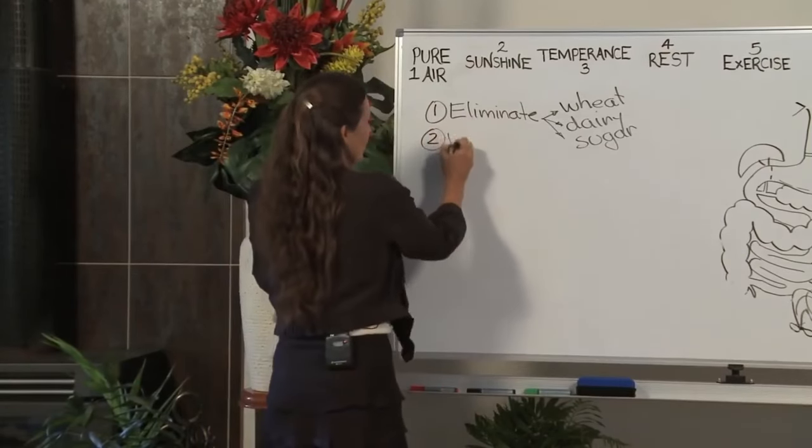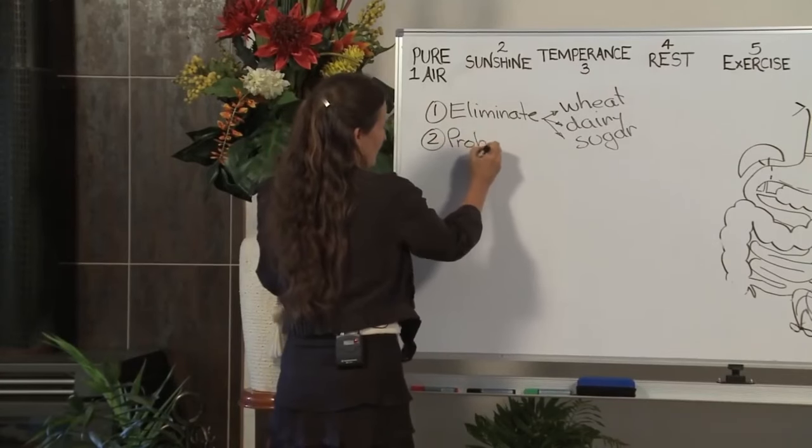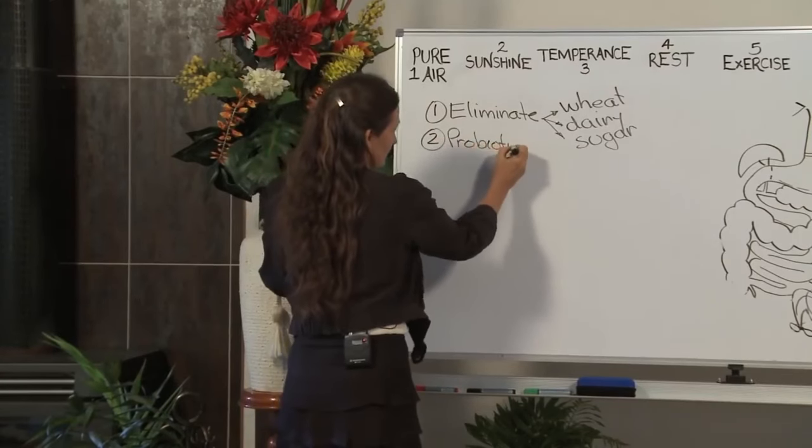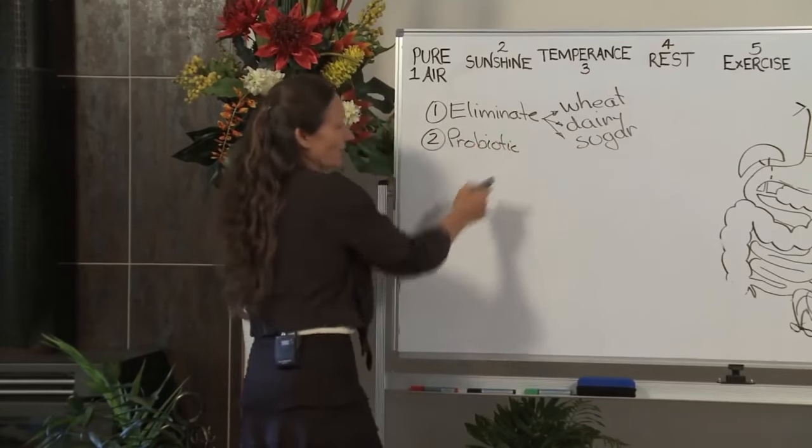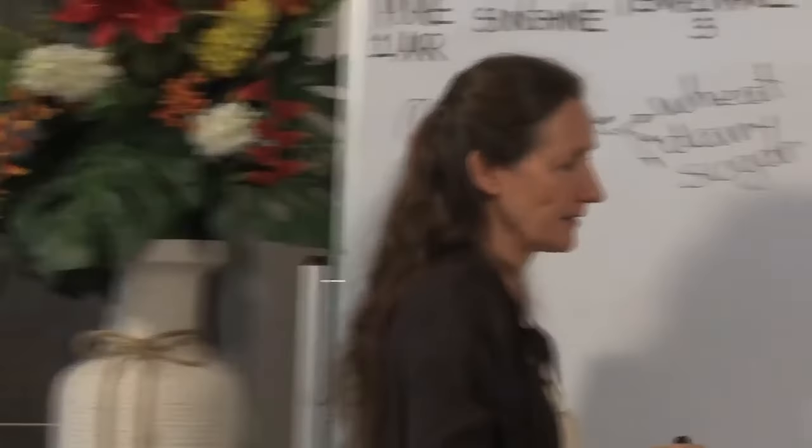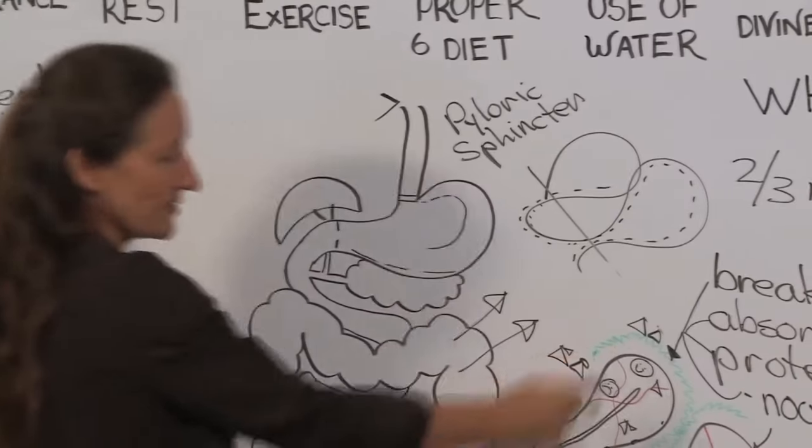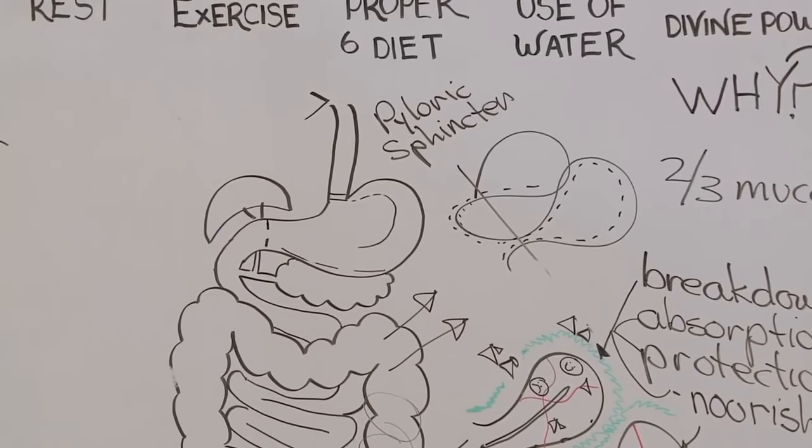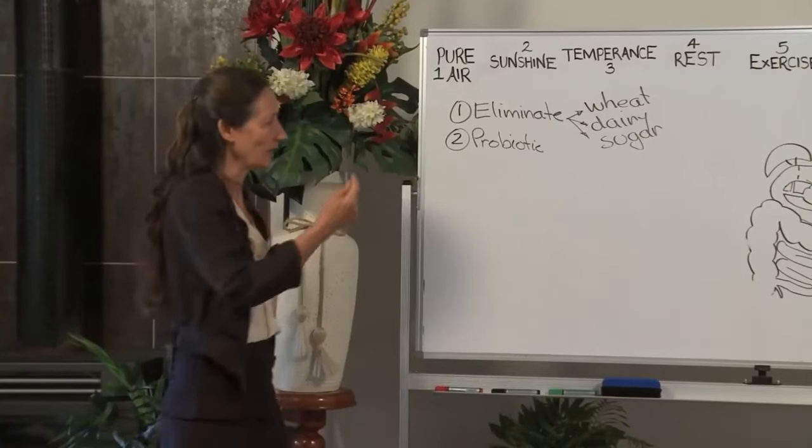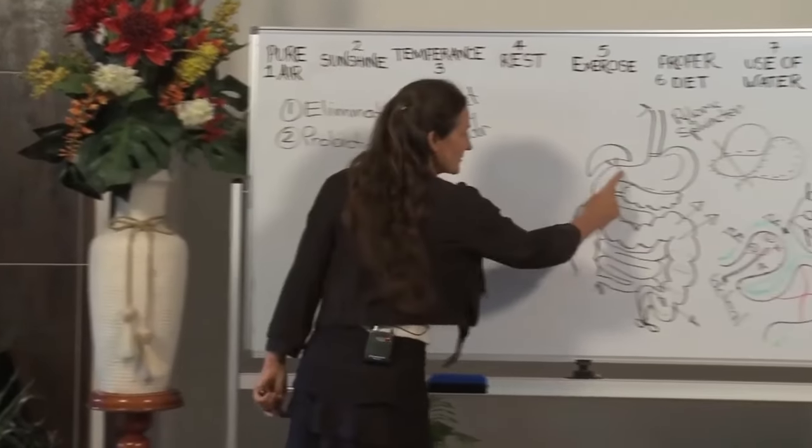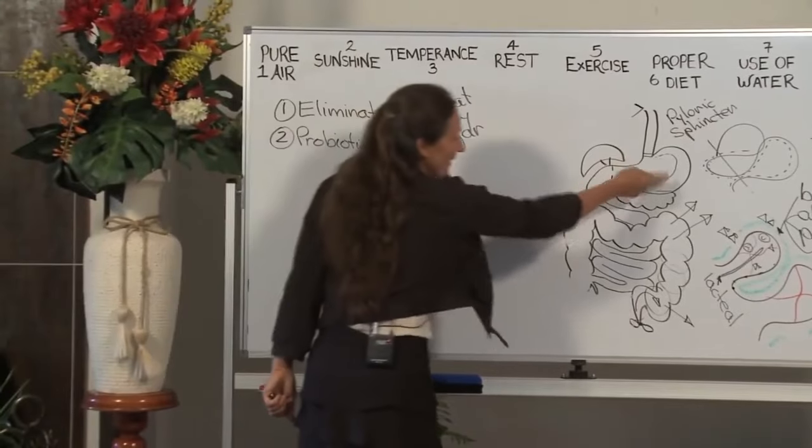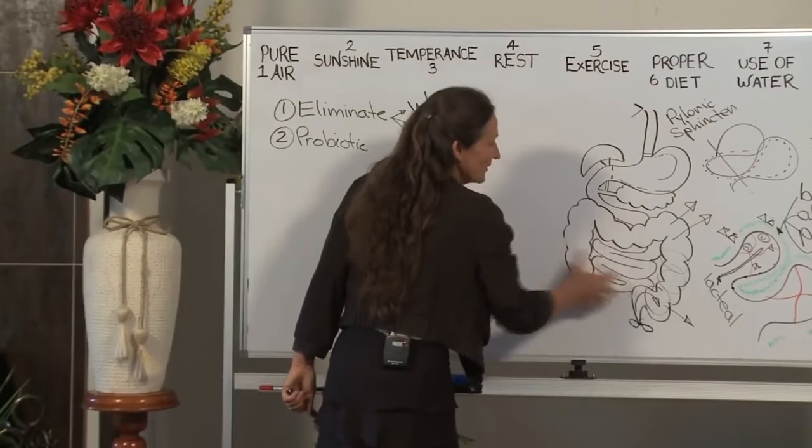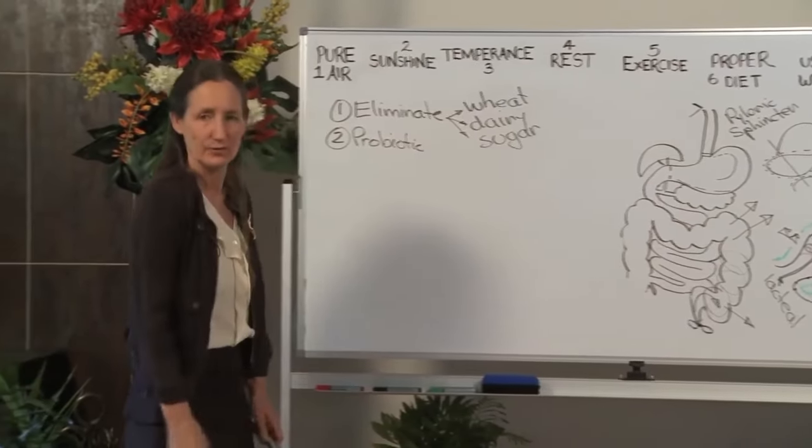Number two, probiotic. A probiotic for life. You can buy probiotic powders that contain Lactobacillus acidophilus bifidobacterium. They'd be taken three quarters of an hour before you eat and they will come down while that pyloric sphincter is open. They will come down and they will start to repopulate the bottom part of your gut.